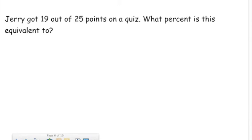Okay, so in this problem, Jerry got 19 out of 25 points on the quiz. What percent is this equivalent to? So the way that you should have set it up, if you used the proportion, is you should have done the part, which is 19, that's how many Jerry got, out of 25 possible points. We want to know what percent that is. So it's always x over 100 when we're finding the percent.